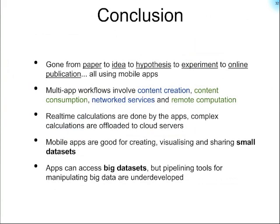That brings us to an end. The workflow I just ran through shows an example of going from reading a paper to having an idea, coming up with a hypothesis, proposing an experiment, and then publishing online — all done relatively easily using apps that already exist. These kinds of multi-app workflows tend to involve a mixed combination of both creation and consumption of content, and they tend to be very heavy on the use of network services. Many need to use remote computational abilities, though it usually makes sense to store the really intense or difficult-to-implement calculations on a remote web service and have the app leverage those capabilities.